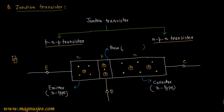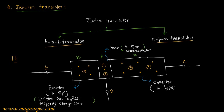In the P-type base, holes are the majority charge carriers — a circle-plus denotes a hole. The P-type base consists of a greater number of holes and a lesser number of conduction electrons, which are denoted by a dot. The emitter has the highest majority charge carrier density.